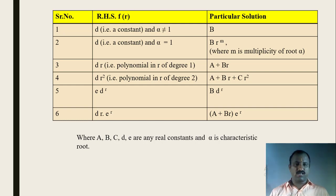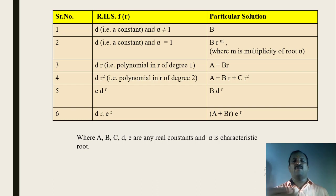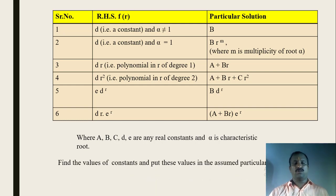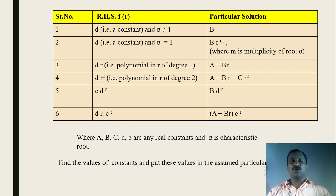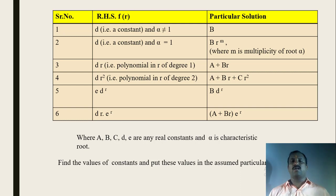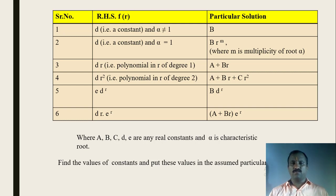We have to find the values of these constants, and then put those values into the assumed particular solution to get the required particular solution of the given recurrence relation.